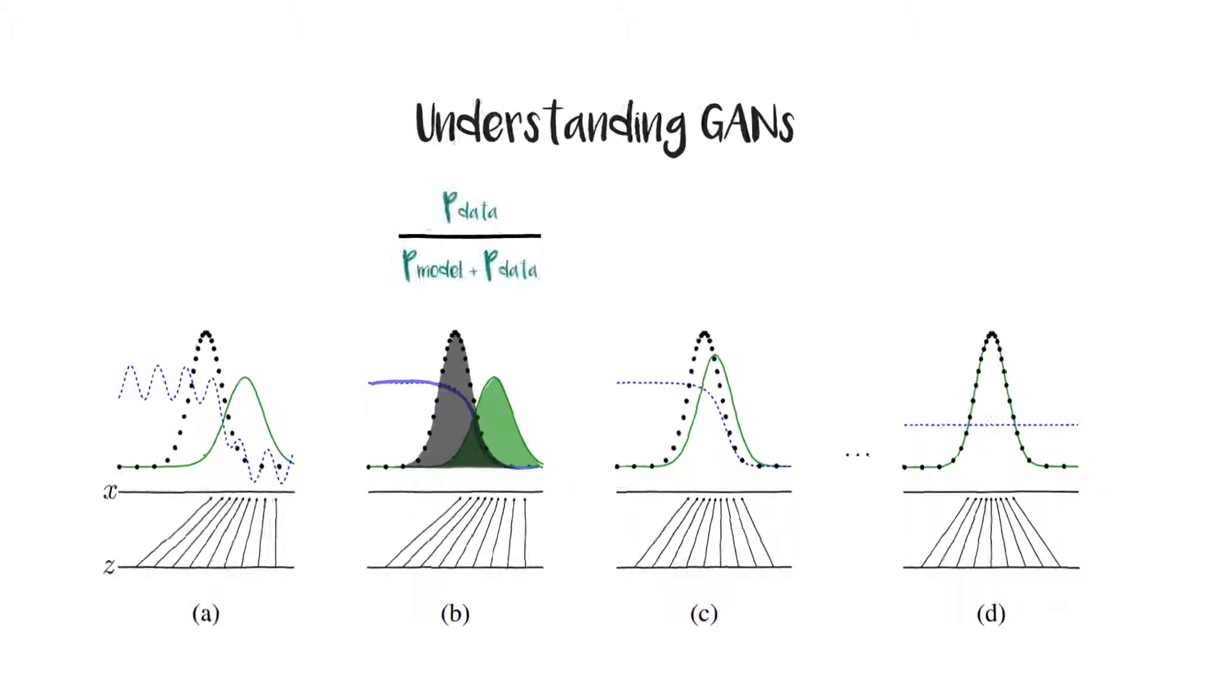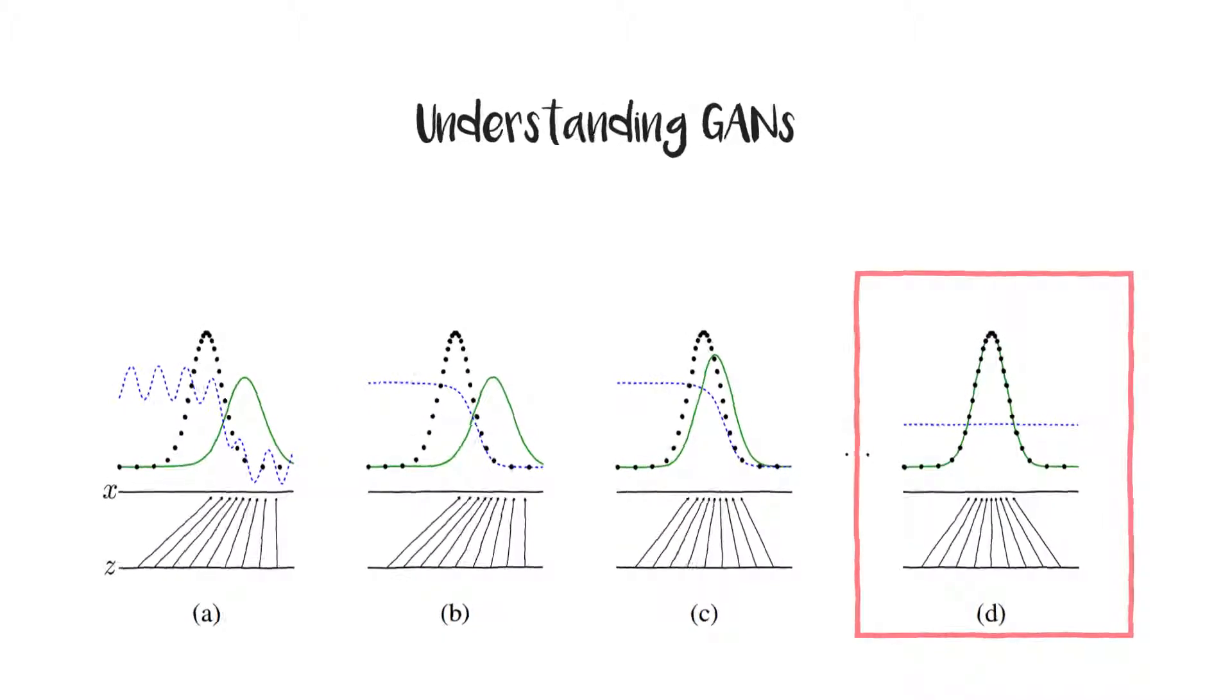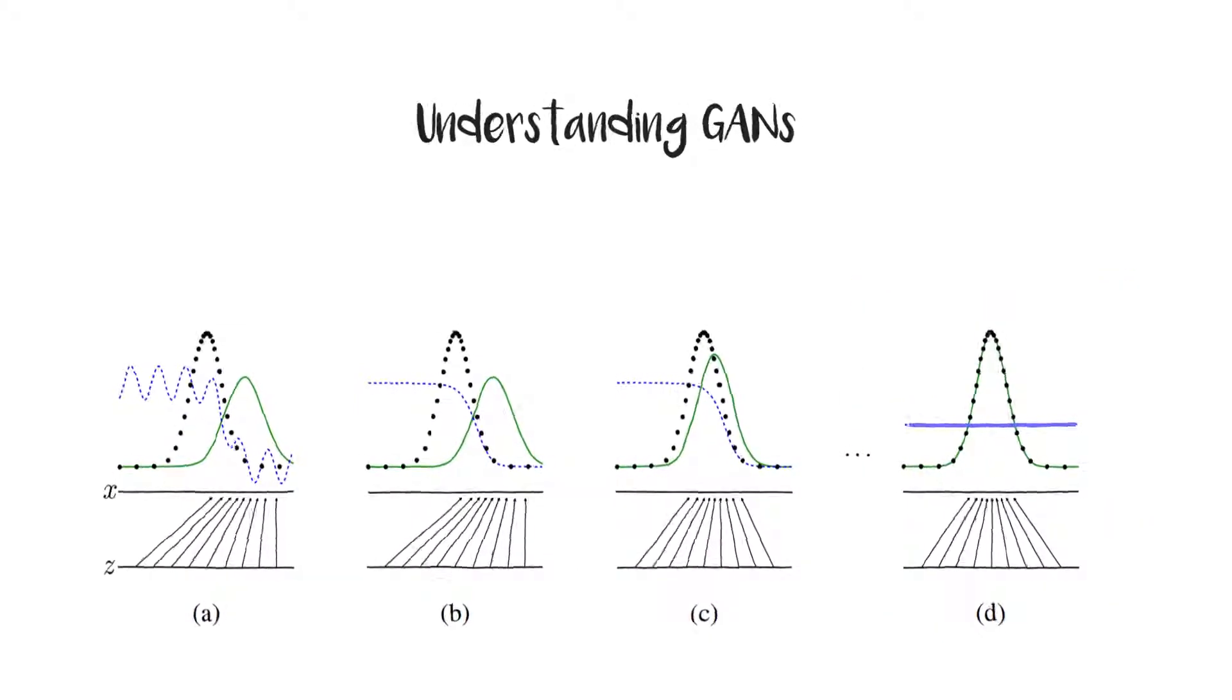It's converging to p_data divided by p_model plus p_data. In the first three subfigures, the discriminator is higher when the odds of actual data over generated are higher. But in subfigure 4, the generator starts to represent the actual data's distribution. That's when the blue line becomes straight with value 0.5—the ideal case where the discriminator is always confused.